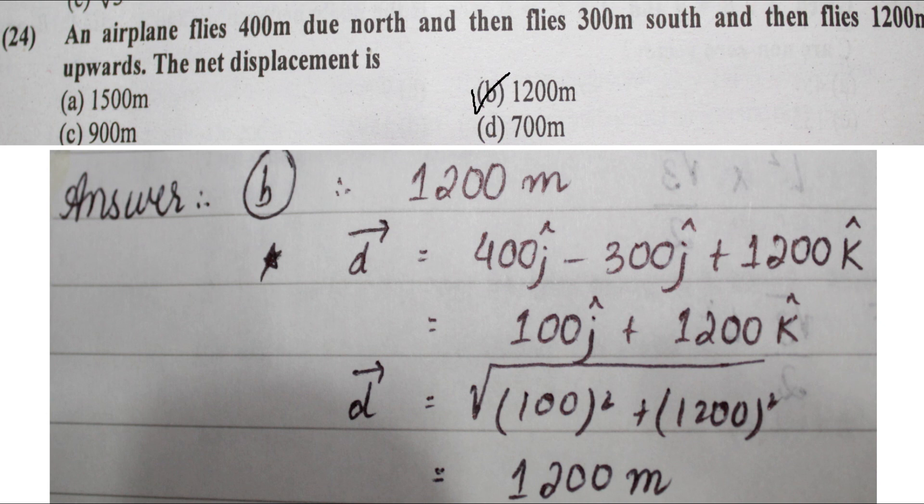Next question: an airplane flies 400 meters due north, then 300 meters south, then 1200 meters upward. The net displacement is calculated as 400j − 300j + 1200k, giving 100j + 1200k. Finding the magnitude gives √(100² + 1200²), and the full and final answer is approximately 1204 meters, option B.